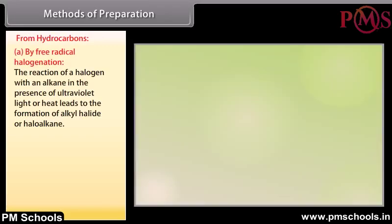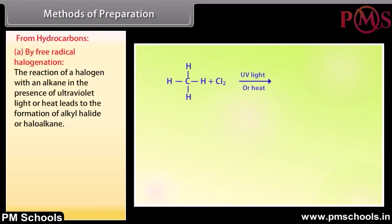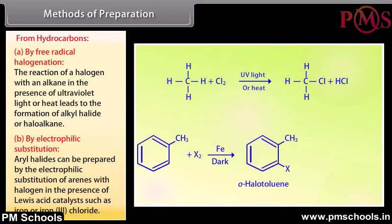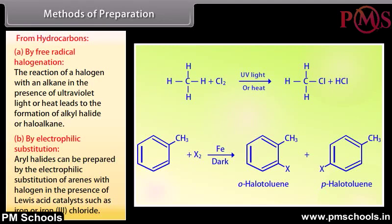From hydrocarbons: by free radical halogenation, the reaction of a halogen with an alkane in the presence of ultraviolet light or heat leads to the formation of alkyl halide or haloalkane. By electrophilic substitution, aryl halides can be prepared by the electrophilic substitution of arenes with halogen in the presence of Lewis acid catalysts such as iron or iron(III) chloride.